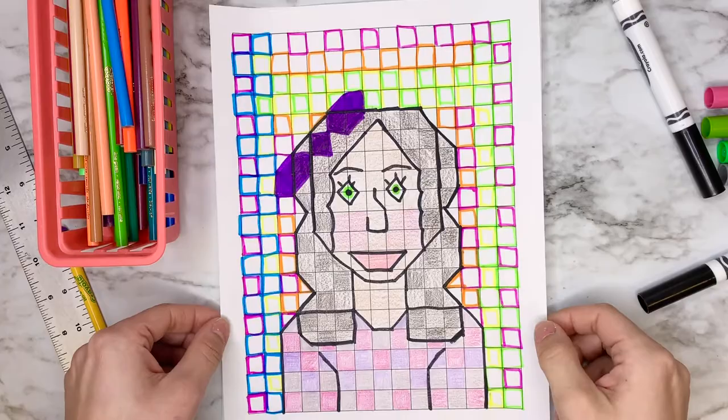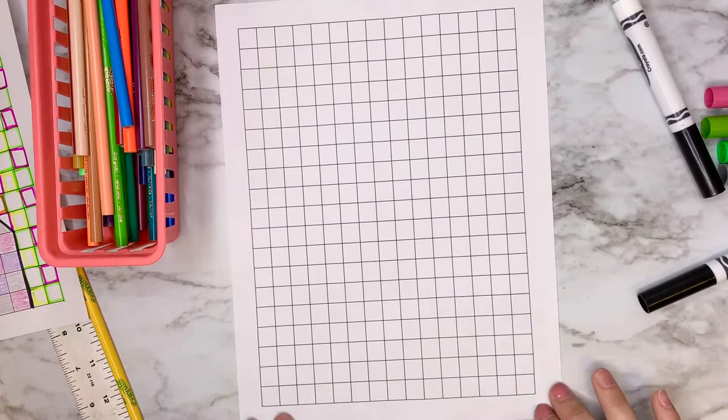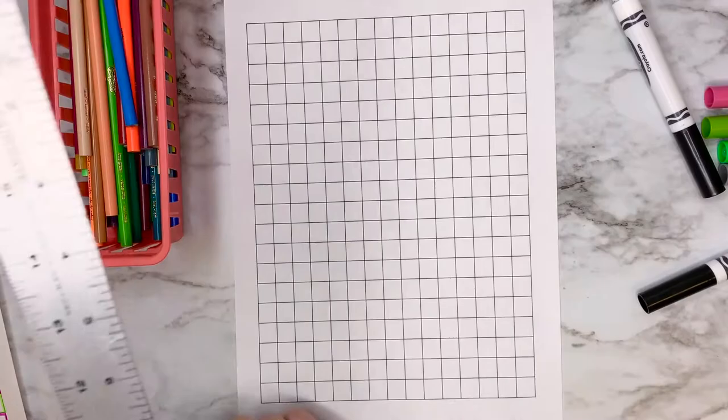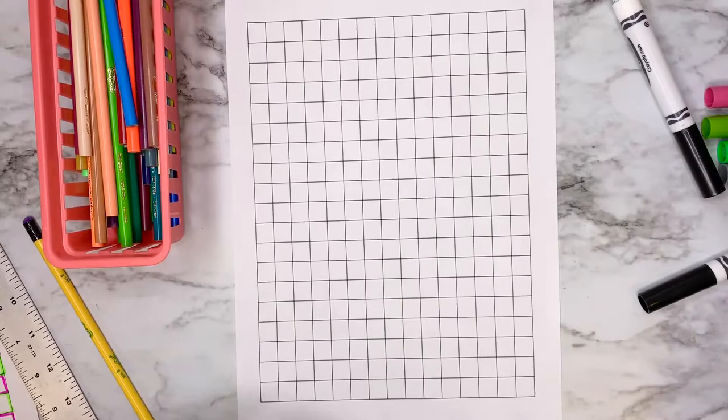For your lesson, you're going to need gridded paper. If you don't have a printer at home, you can use your ruler and a pencil to trace those lines. You're also going to want colored pencils, crayons, and some markers.